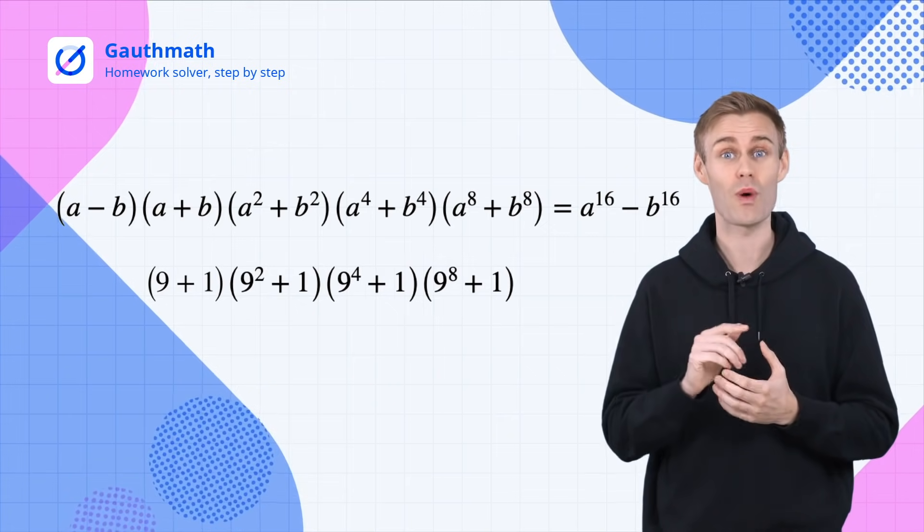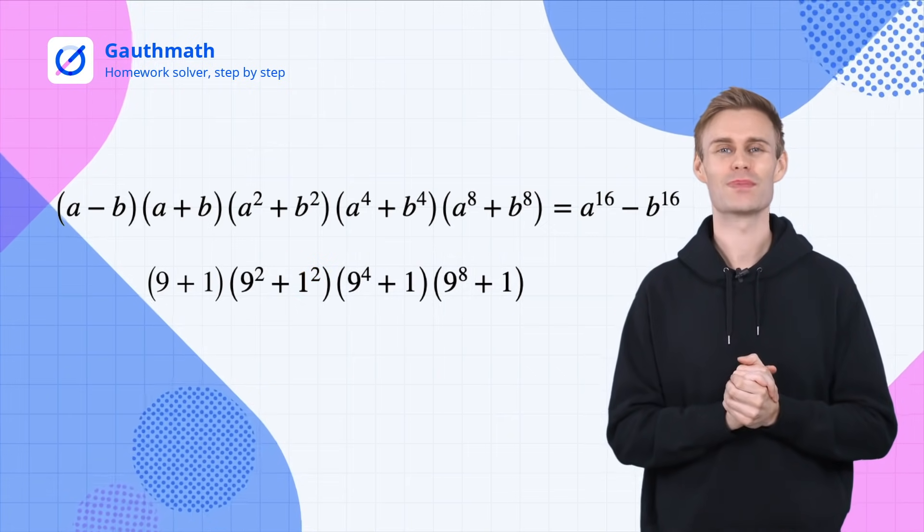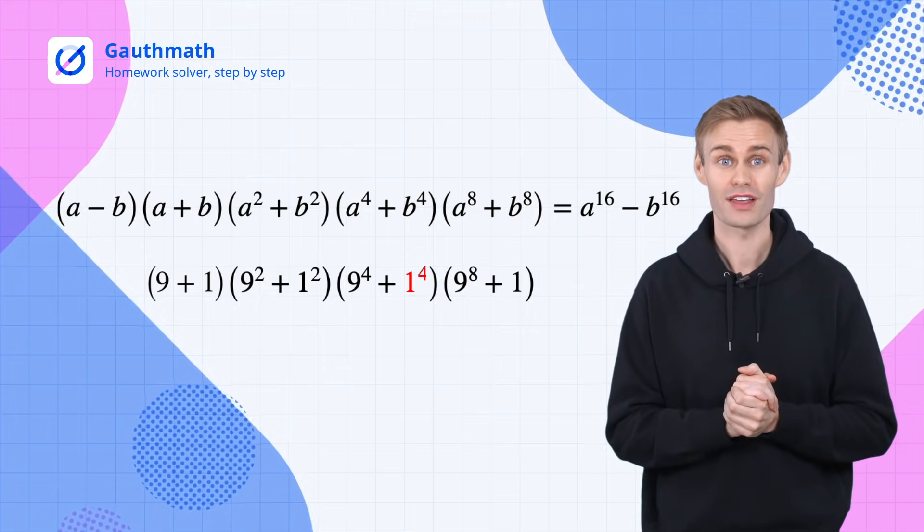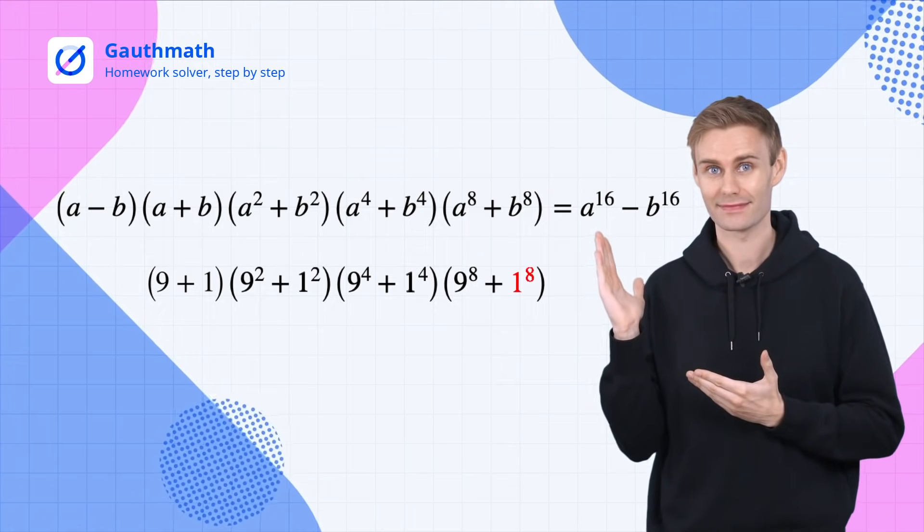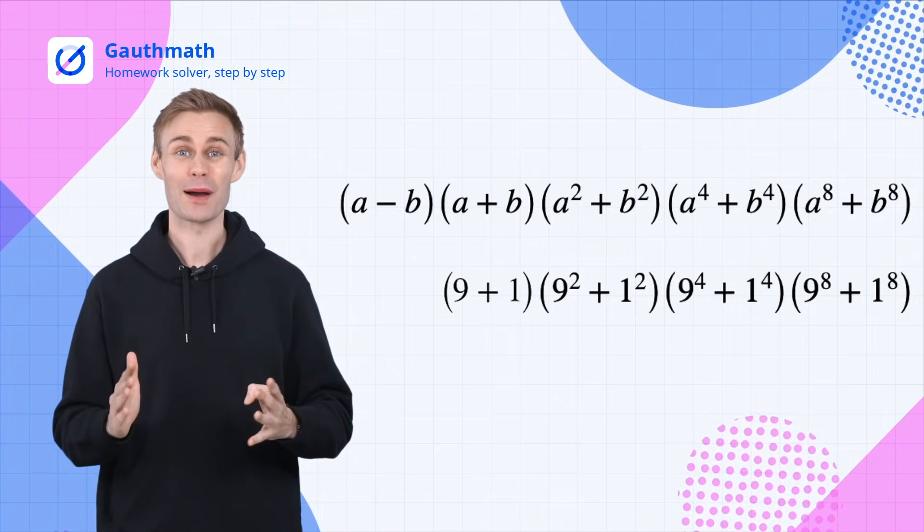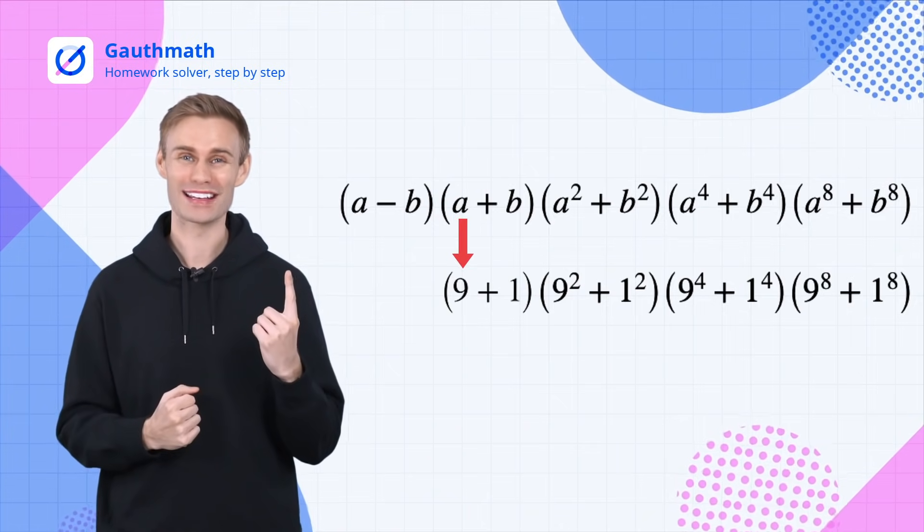Let's replace one with one squared. Here we replace one with one to the fourth and then replace one with one to the eighth. Now number nine is the A and number one is the B.